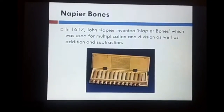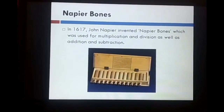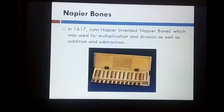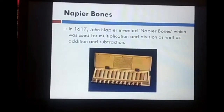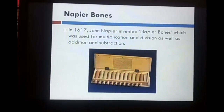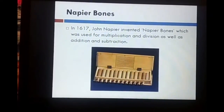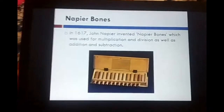Napier's Bone. In 1617, John Napier invented Napier's Bone, which was used for multiplication, division, as well as addition and subtraction. Abacus is used for addition and subtraction only, whereas Napier's Bone is used for multiplication and division, addition and subtraction.